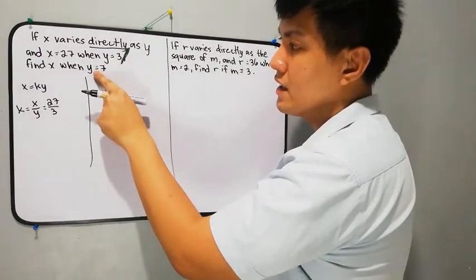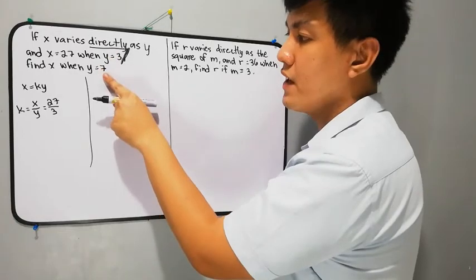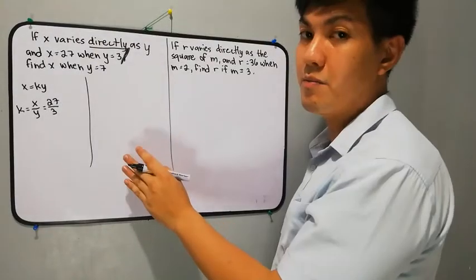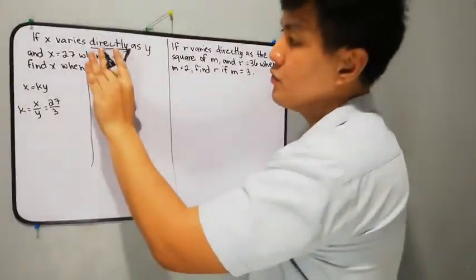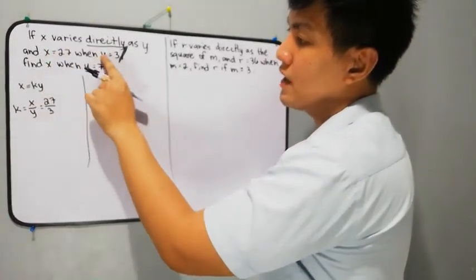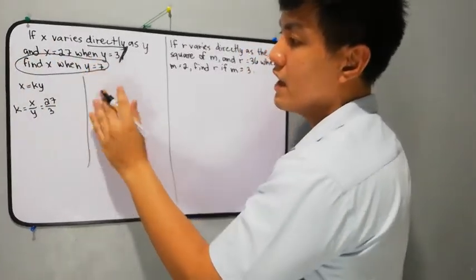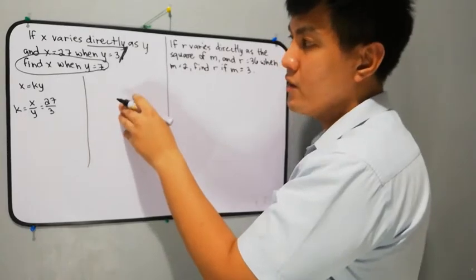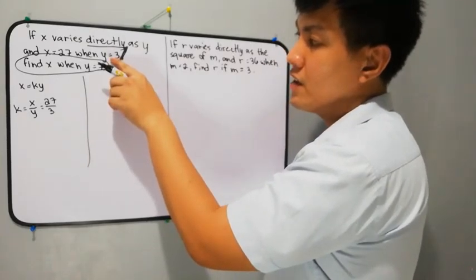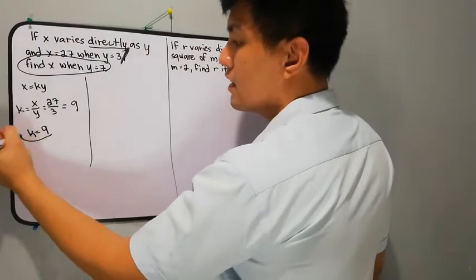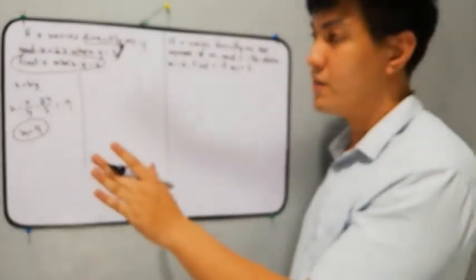Take note we have two values of y: 3 and 7. That's why we divide the statement — the y value from the first part, which is 3, is what we use here. So 27 divided by 3 is equal to 9. The value of k here is 9. We're done with the first part of the solving.